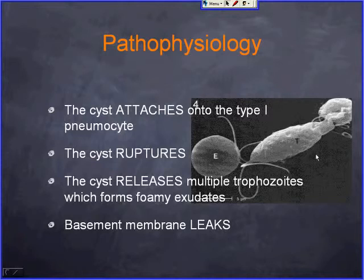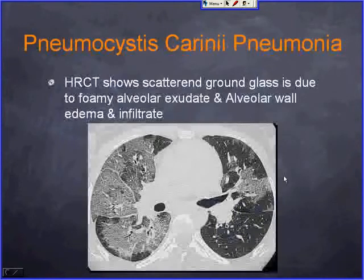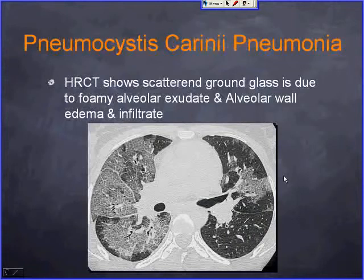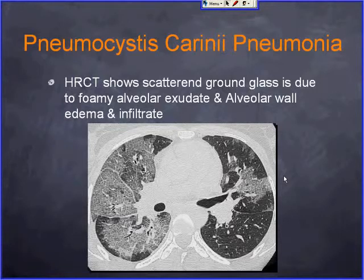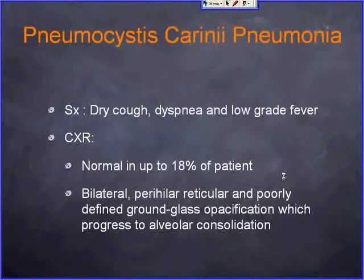On high-resolution CT you see scattered ground glass opacification, which is due to foamy alveolar exudates the trophozoites produce, along with interlobular and intralobular septal thickening from edema within the interstitium and inflammatory cell infiltrates. Patients usually present with dry cough, dyspnea, and low-grade fever.